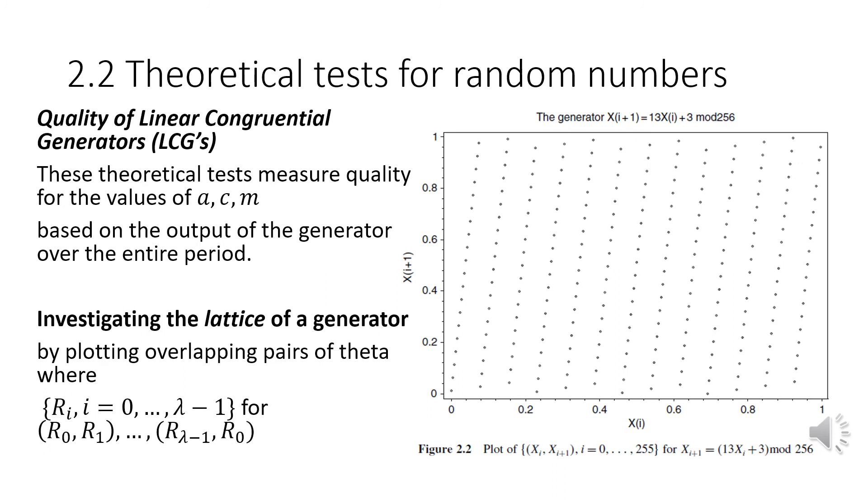For theoretical tests of random numbers, the quality of the random number generator can be assessed based on the values of A, C, and the modulus. The lattice of a generator can be investigated by plotting the overlapping pairs of the theta value. If you plot multiple full generator pairs for R sub zero, R sub one, so on and so forth, you can see a disturbing feature where essentially all the points can be covered by pairs of parallel lines.